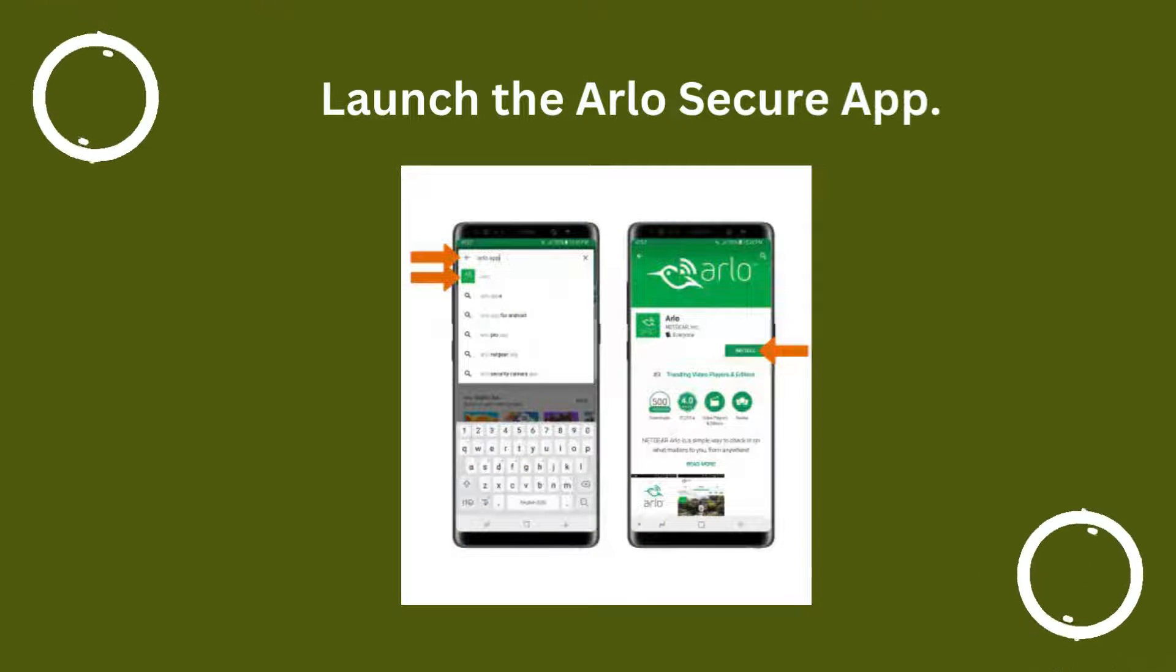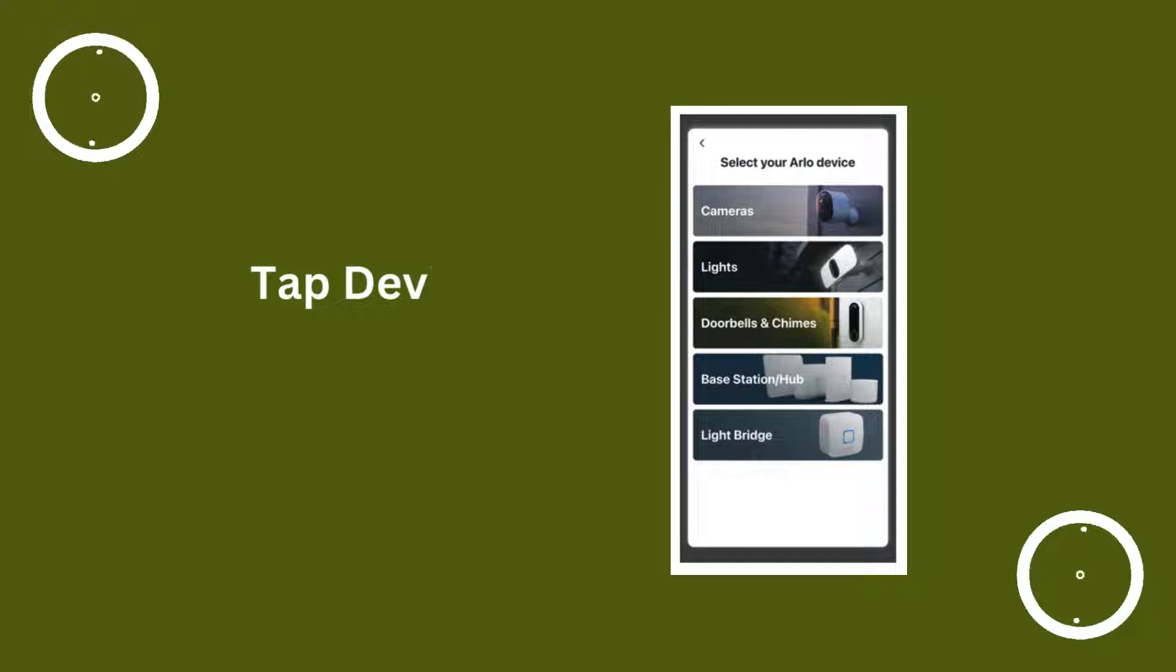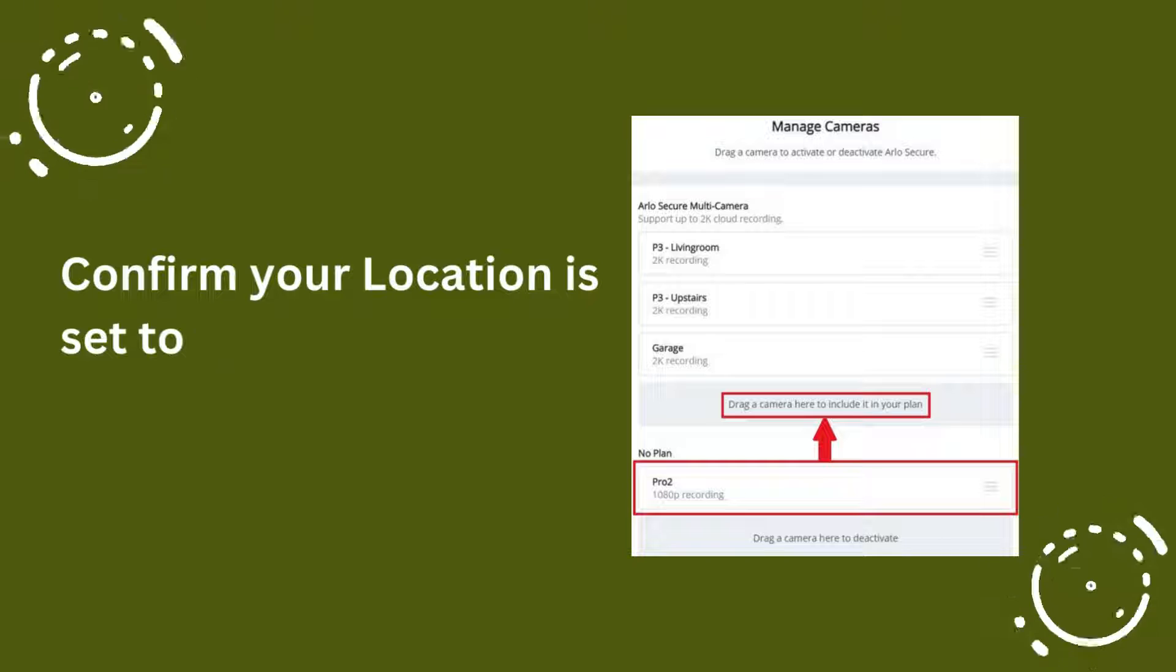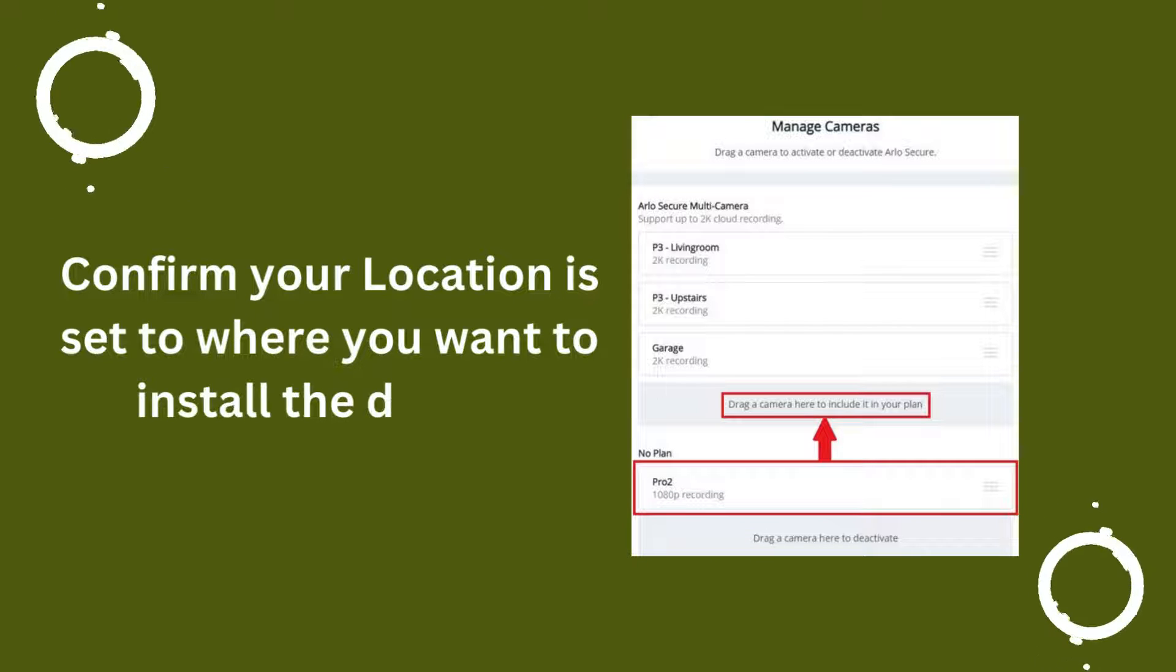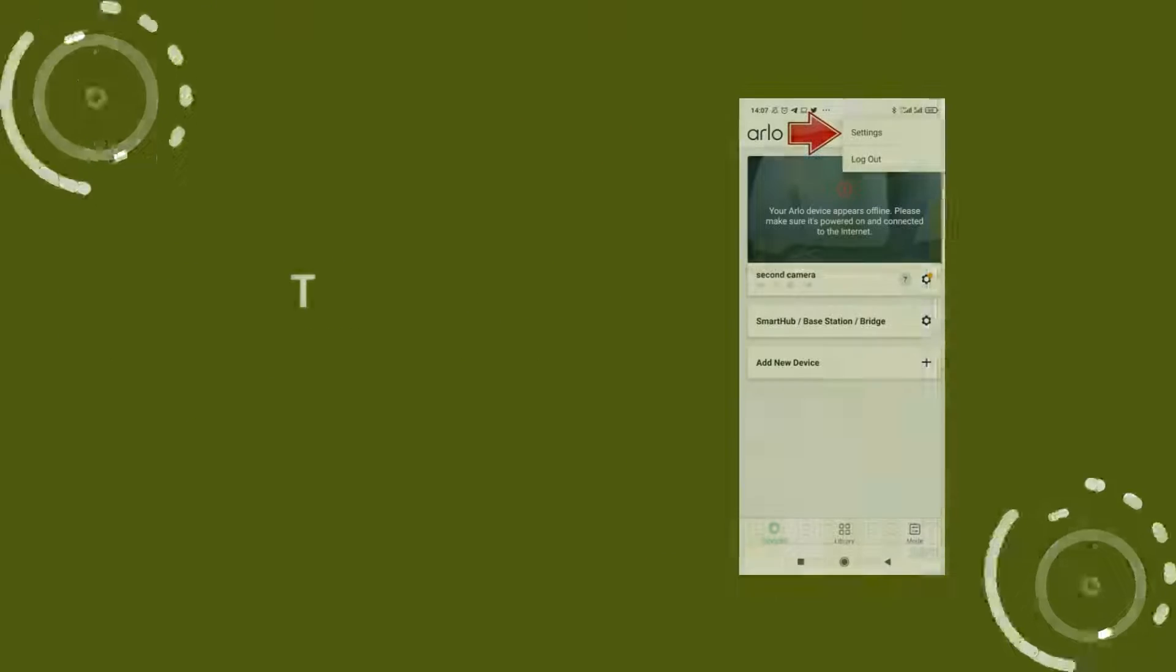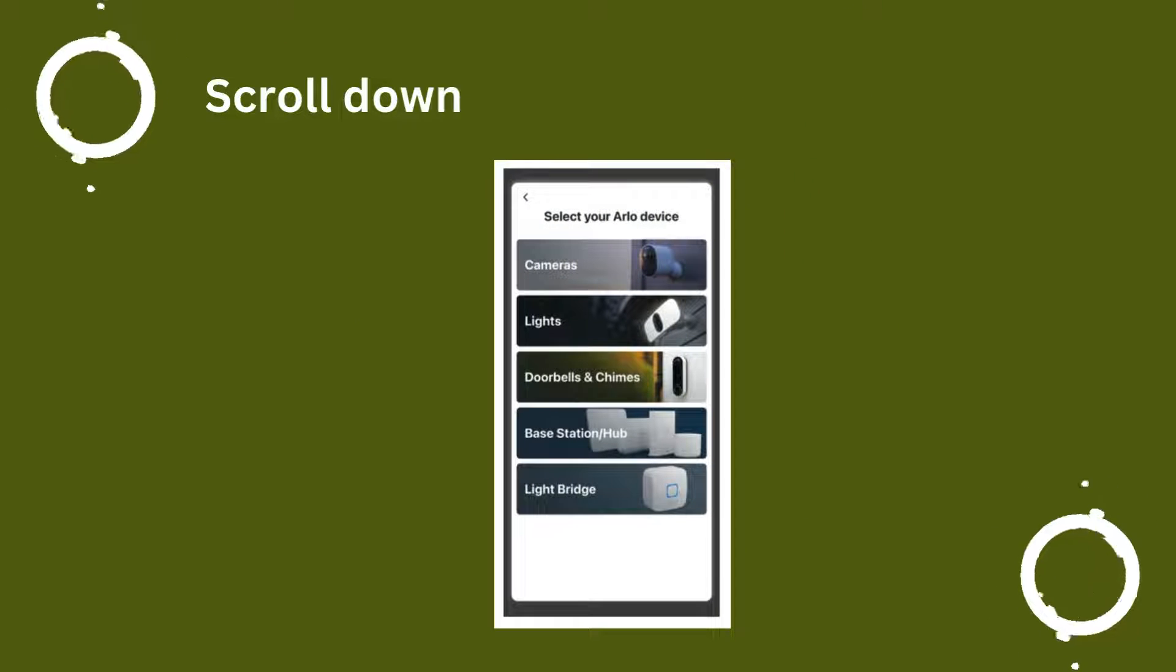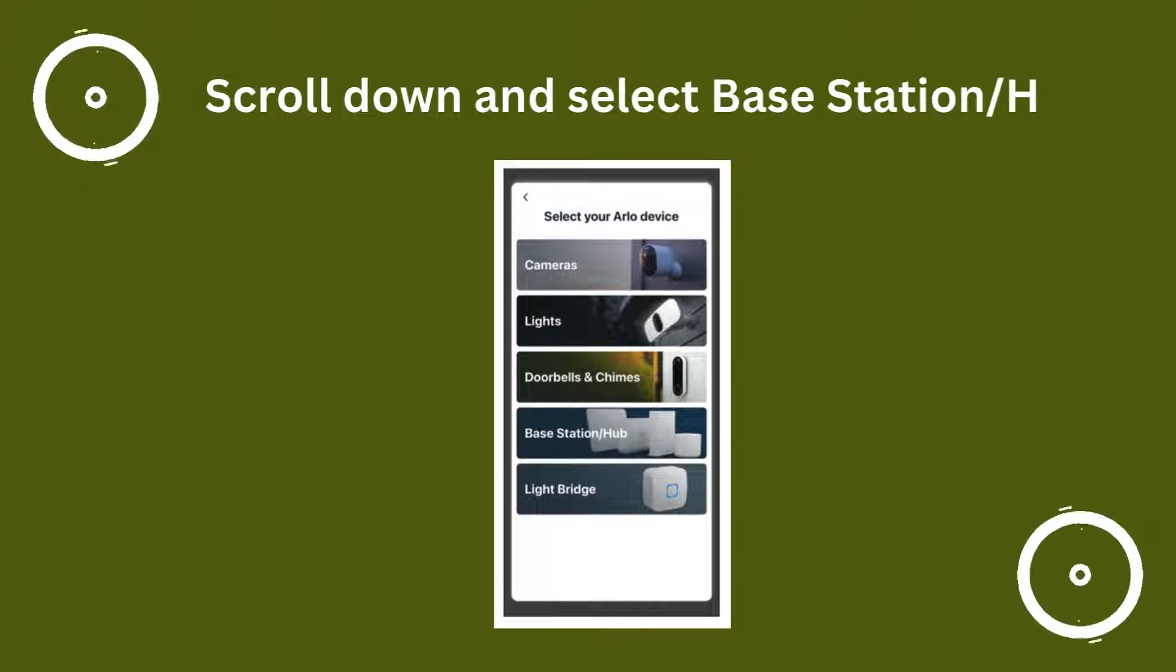Launch the Arlo Secure app. Tap Devices. Confirm your location is set to where you want to install the device. Tap Add icon. Scroll down and select Base Station slash Hub.